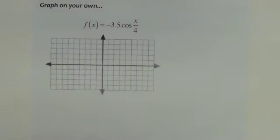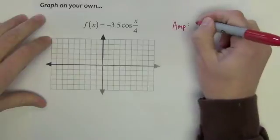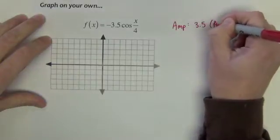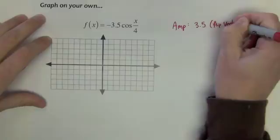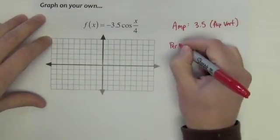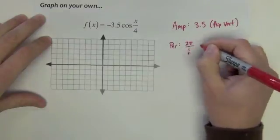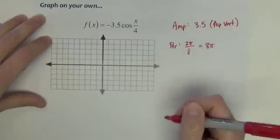Let's see, I need to begin with the same two things. I need to find the amplitude, and I need to find the period. The amplitude on this one is 3.5, but it will flip vertically. That's the negative. The period is 2π divided by 1/4 or 8π.